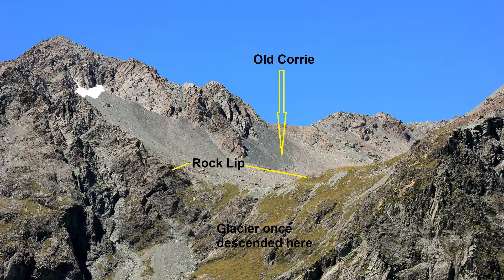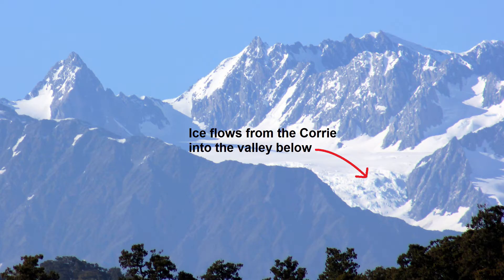At the front of the ice, the erosion is less, causing a lip of rock to be left there. As more ice accumulates, it flows over the lip and into the valley below, forming a glacier.